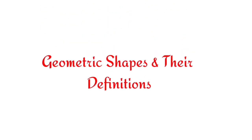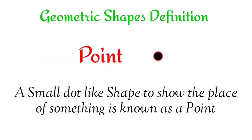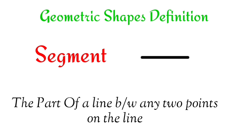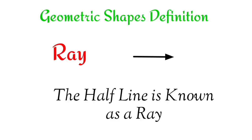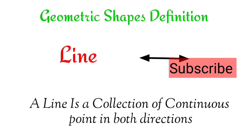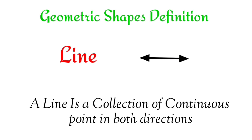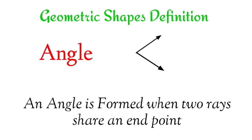Geometric shapes and their definitions. Point: A small dot-like shape to show the place of something is known as a point. Segment: The part of a line between any two points on the line. Ray: The half line is known as a ray. Line: A line is a collection of continuous points in both directions. Angle: An angle is formed when two rays share an end point.